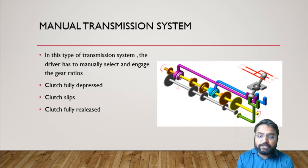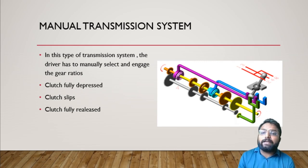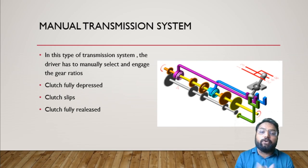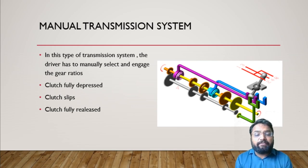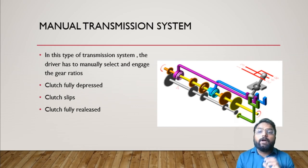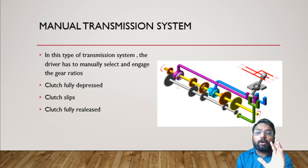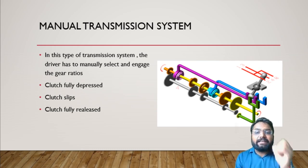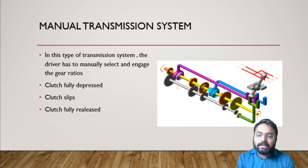What is a manual transmission system all about? In this type of transmission system the driver has to manually select the gear ratio. In an automatic or CVT gearbox you can have that infinite number of velocity or gear ratios, but in a manual gearbox there is a limitation — it depends on the driver to change the gear ratio depending on the driving condition experienced by that particular driver. This is achieved with the help of clutch engagement and disengagement.